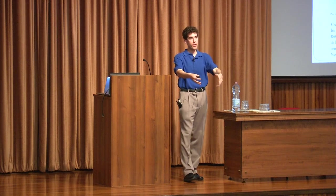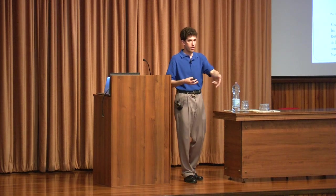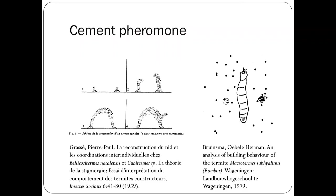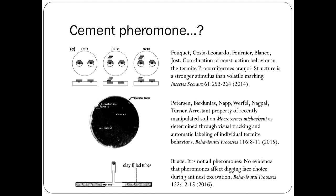One termite puts down a blob of material with this chemical. Another termite comes along, smells the chemical, and puts down its own blob with more chemical. So there's a positive feedback loop with accumulation of material and pheromone, and you wind up with pillars built. But in recent years, there's been an increasing body of work casting doubt on the role of a cement pheromone as traditionally viewed — or even on whether such a thing as traditionally conceived exists.